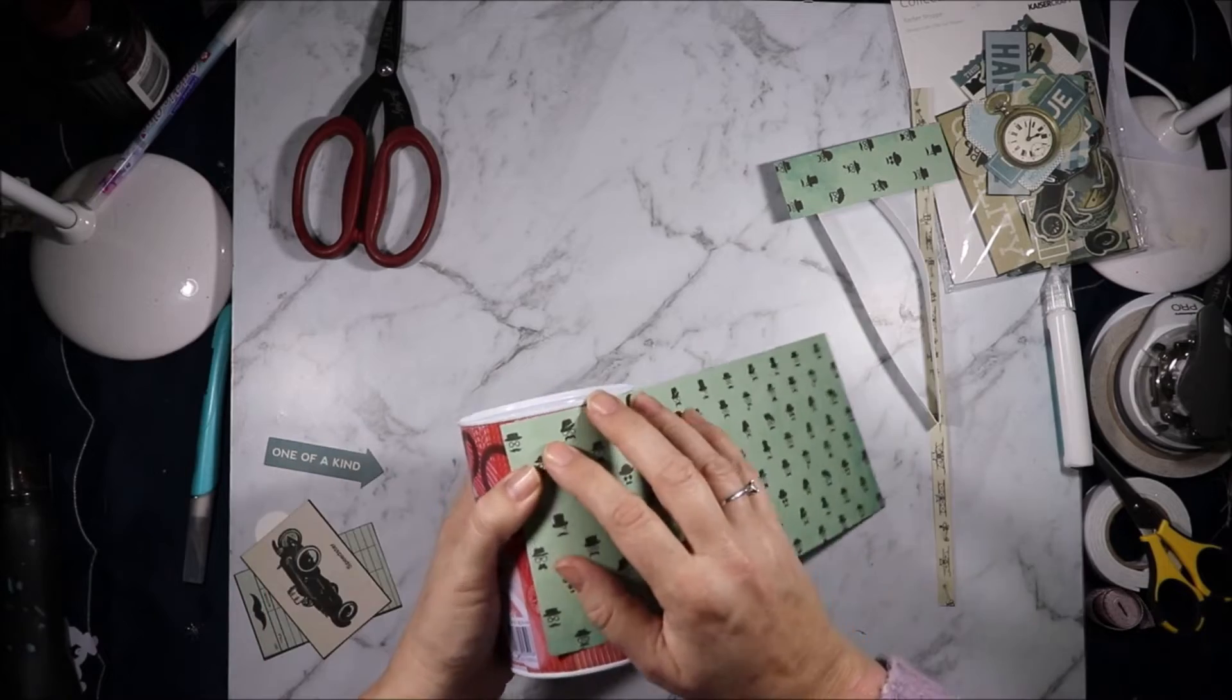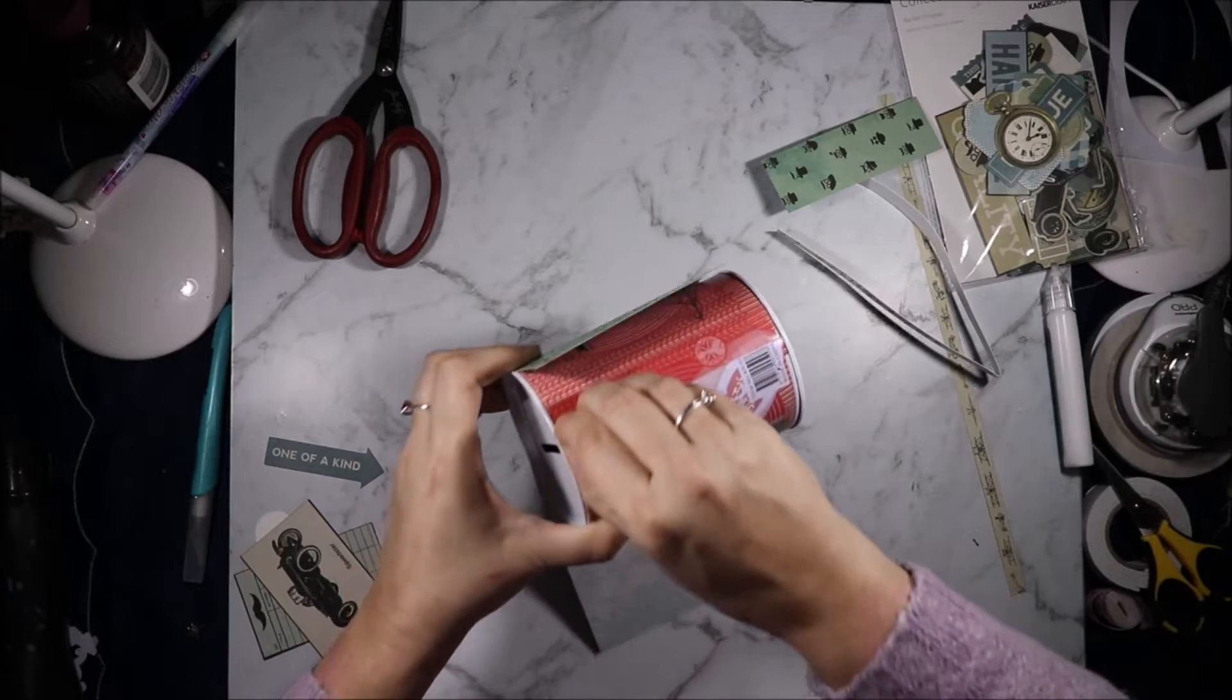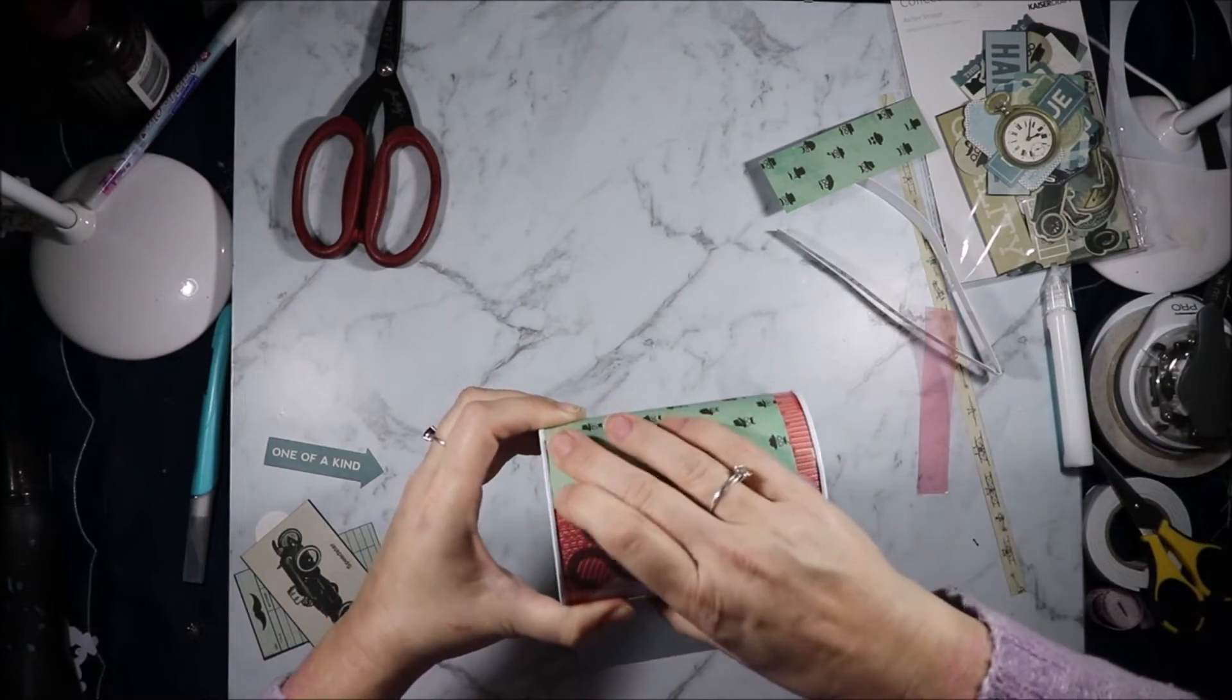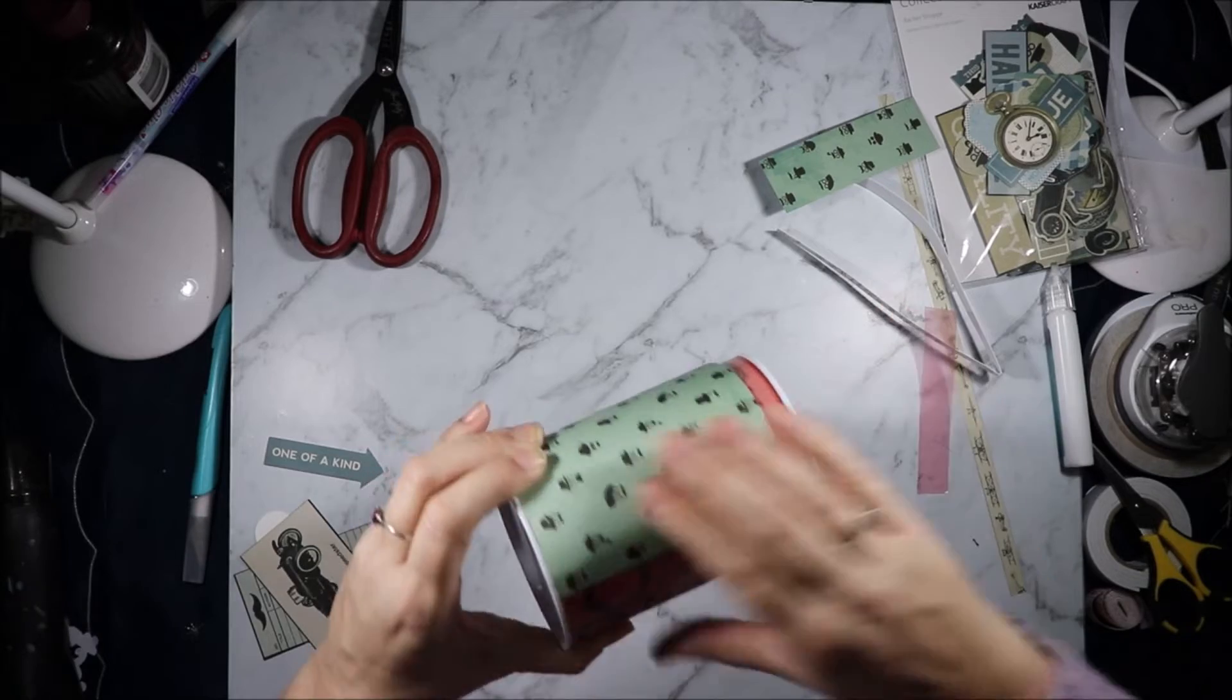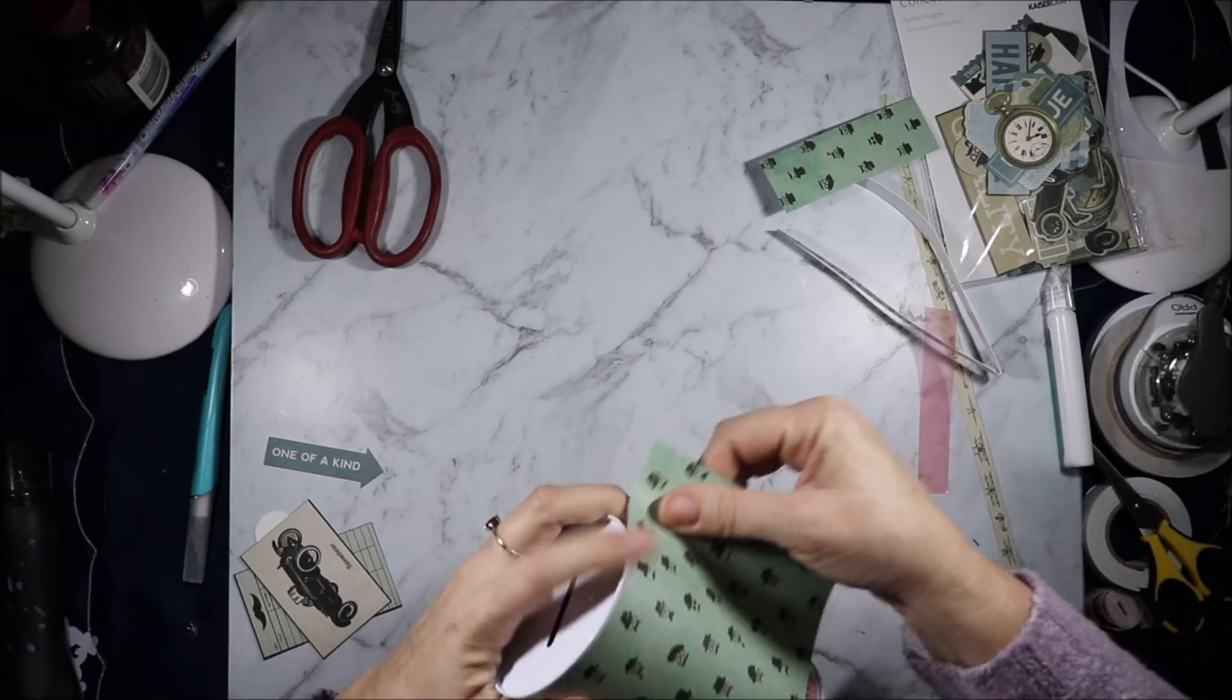What I do is I lay this and work out where it needs to be and I hold it in place and I will peel that back and then I will carefully push that down and then I'm going to tightly run this all the way around.